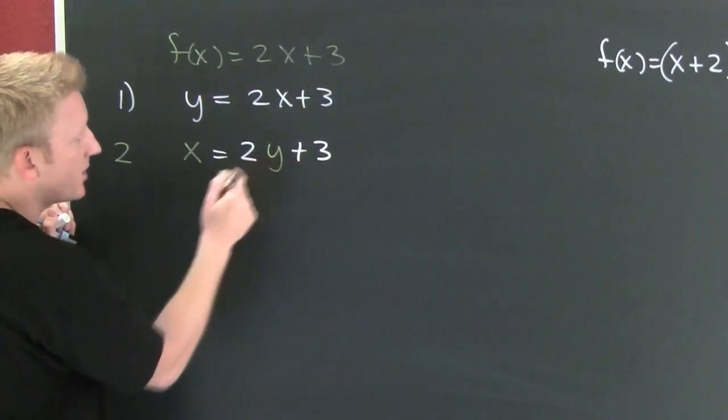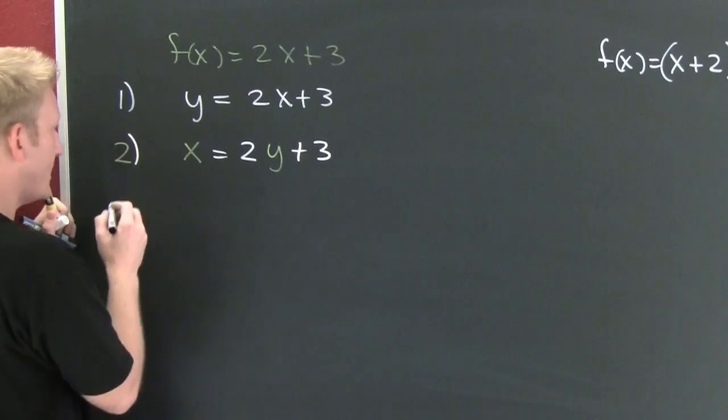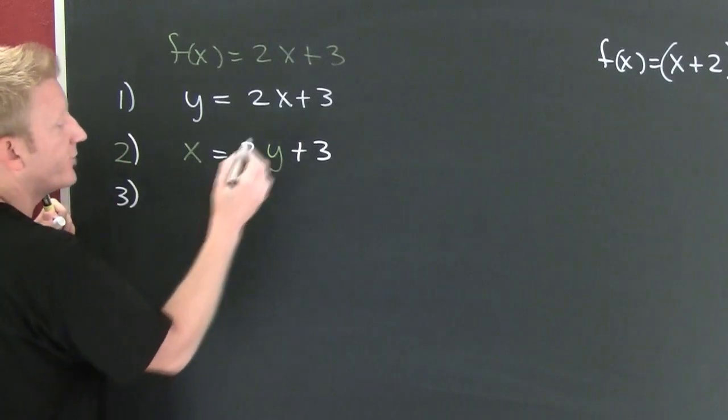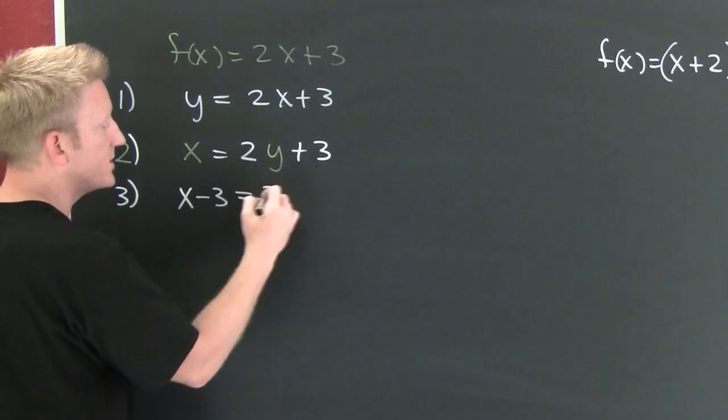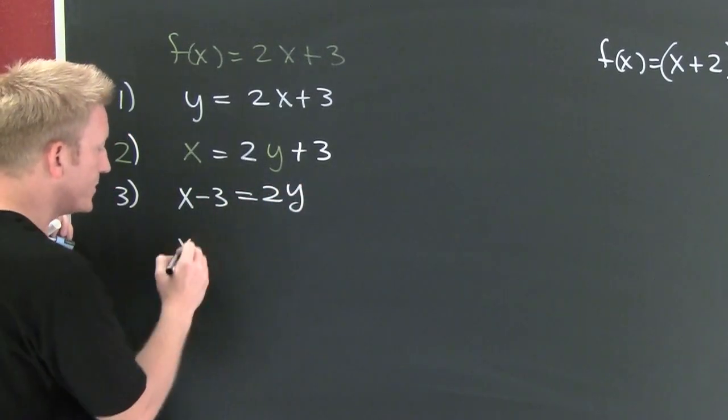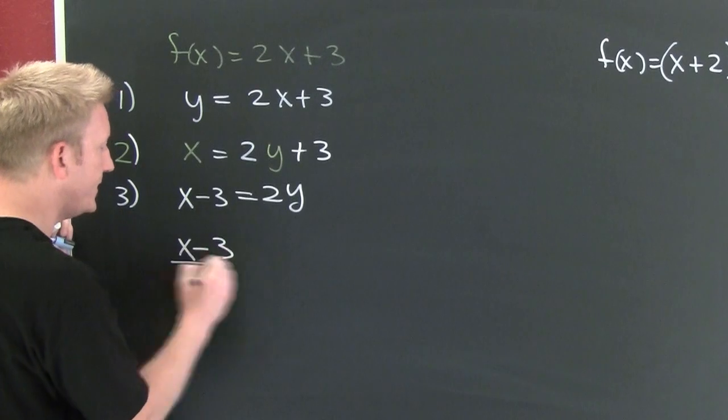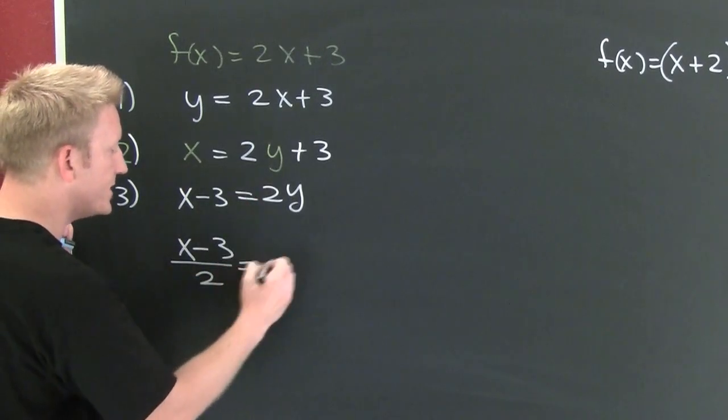And then I'm going to solve for y. That's step three, solving for y. So I subtract off that 3. x minus 3 is equal to 2y. And then I divide by that 2. So then x minus 3 over 2 is equal to y.